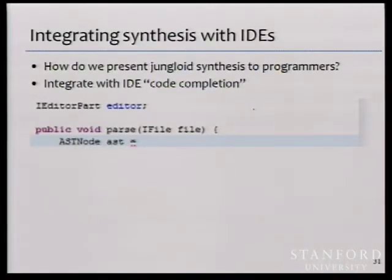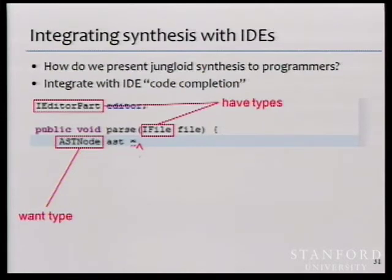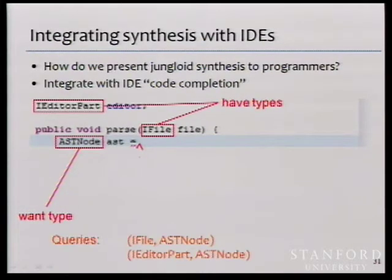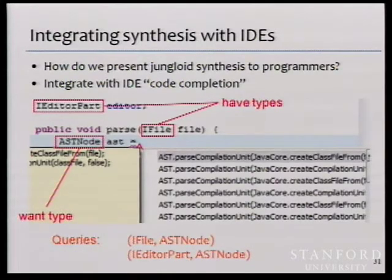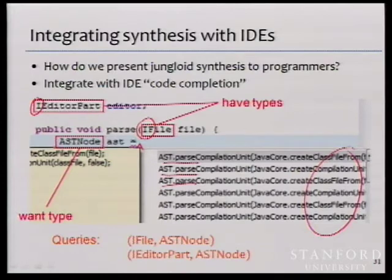The interface to the programmer is piggybacked on the autocompletion in modern IDEs. When your cursor is positioned to initialize a variable, the IDE looks at variables in scope, determines types, issues have-want queries to the synthesizer, which produces ranked jungloids displayed in a familiar completion dropdown. Multiple candidates may look similar but differ in the concrete types used as arguments — for example, iEditor and iFile are interfaces with many implementations, and the programmer selects the right one.